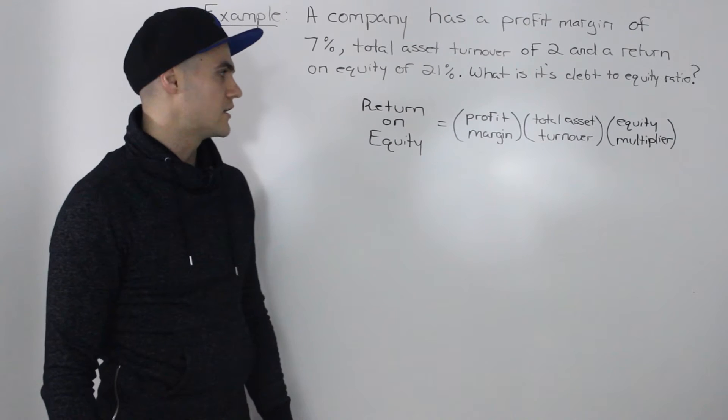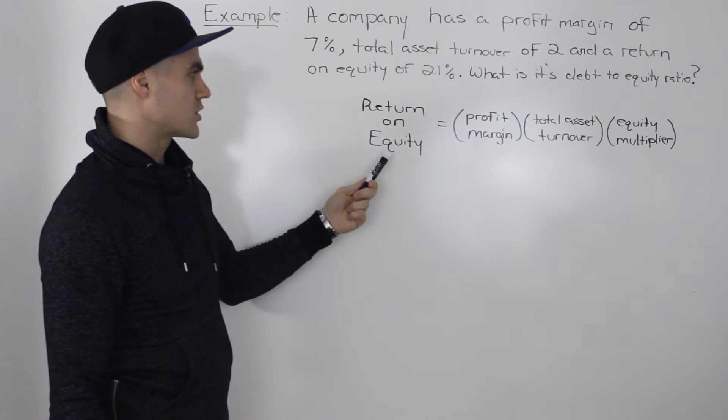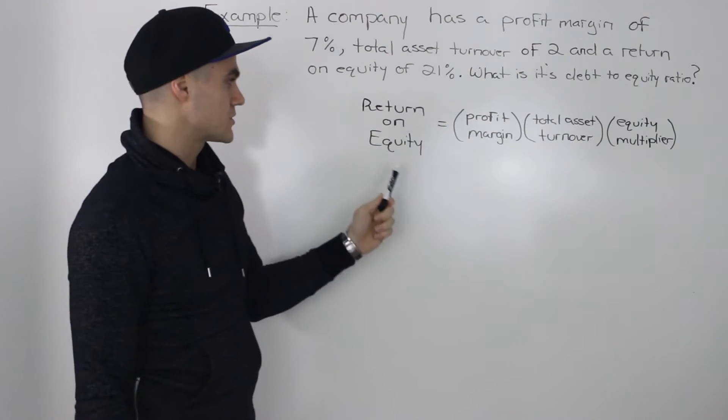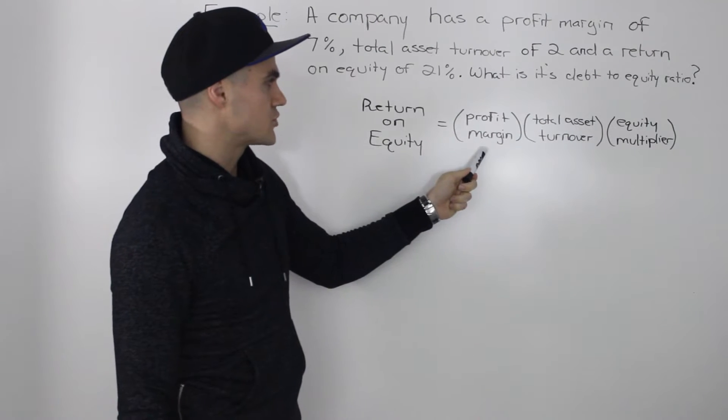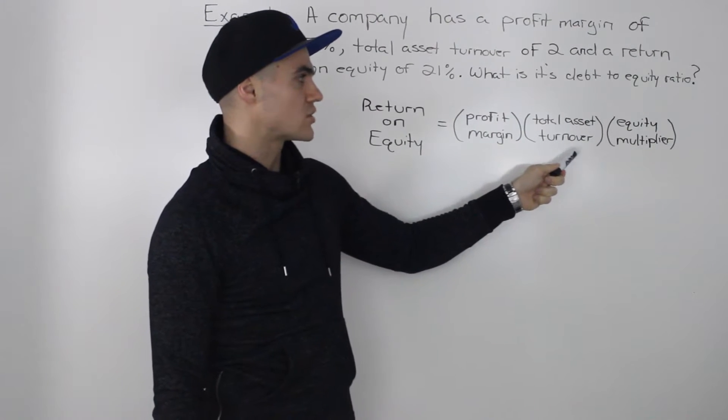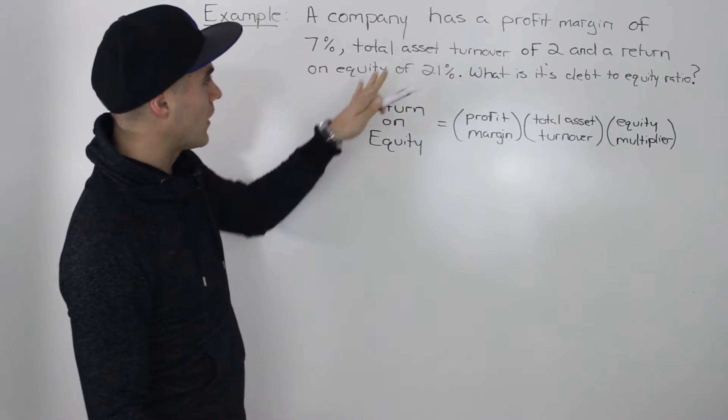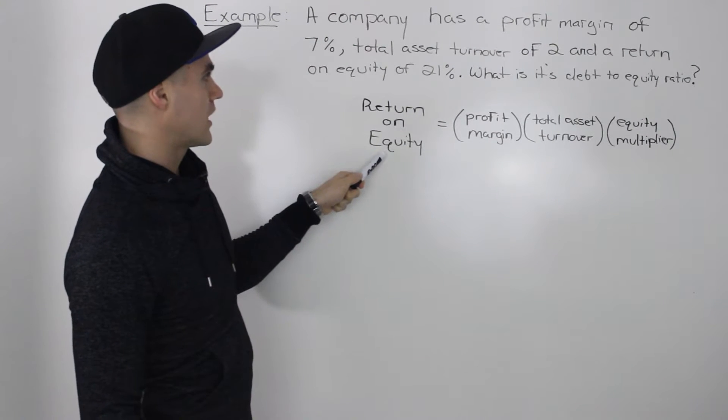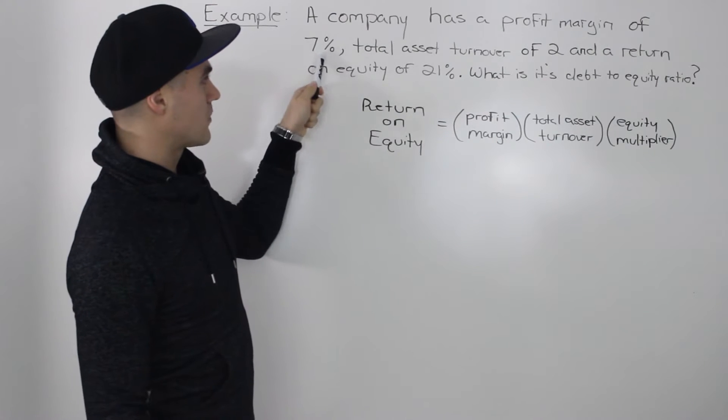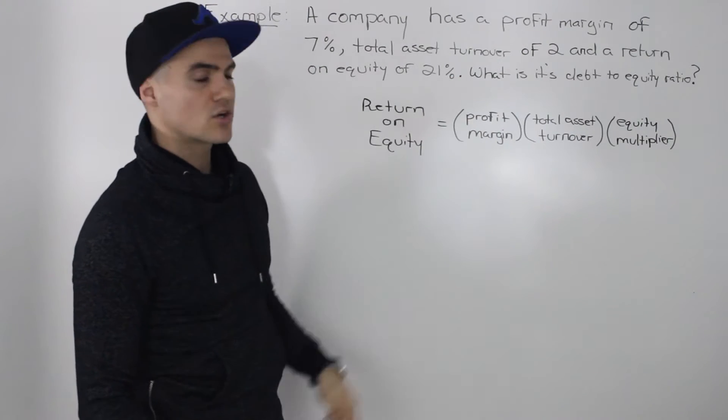And the DuPont identity, if you remember, is basically the return on equity split up into three components. So return on equity is equal to the profit margin times the total asset turnover times the equity multiplier. And notice how in the question, we're given the return on equity, we're given the profit margin, and we're given the total asset turnover.